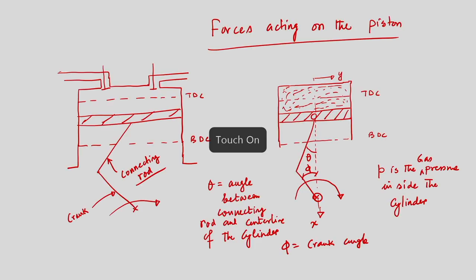When the piston has continuous movement between the top dead centre and bottom dead centre, frictional force will act to resist the piston motion. When the piston travels from TDC to BDC, frictional force resists the motion, and when it travels back from BDC to TDC, the frictional force again acts against the piston movement. The force on the connecting rod is F_R and the frictional force acting opposite to the piston movement is F_T.